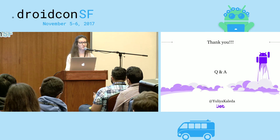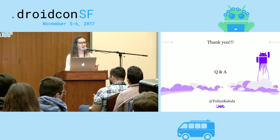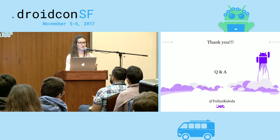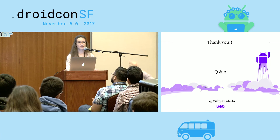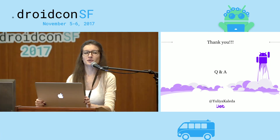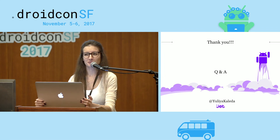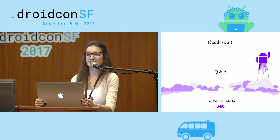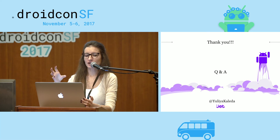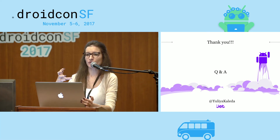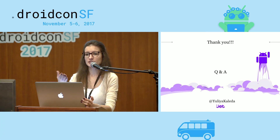We have some time for questions. One question was: is there a roadmap or plan on how to migrate from the App Module to modularized code to support Instant Apps? In terms of modularization, the steps I showed cover it.